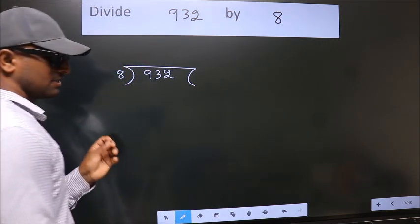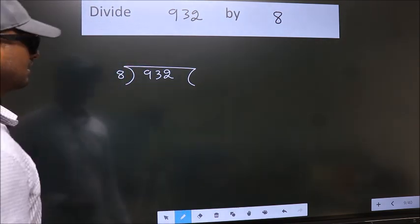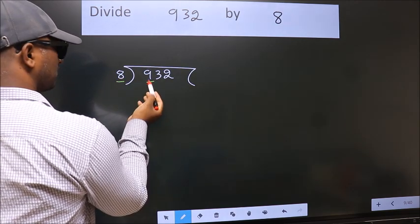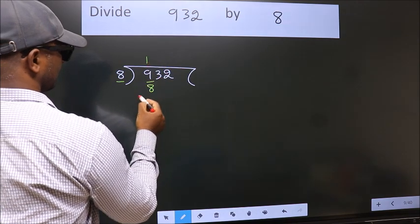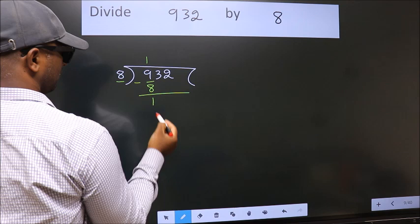This is your step 1. Next, here we have 9, here 8. A number close to 9 in 8 table is 8 once 8. Now we should subtract. We get 1.